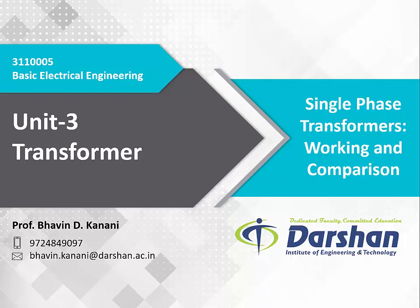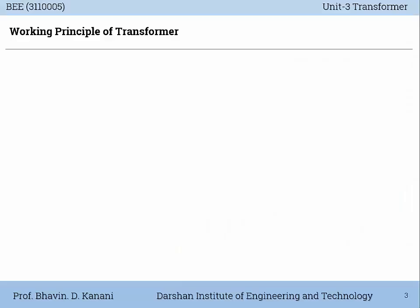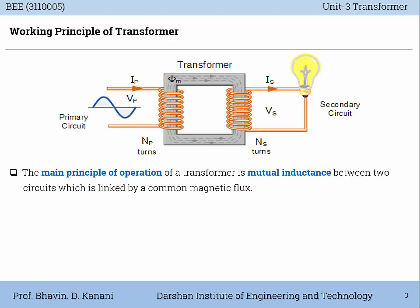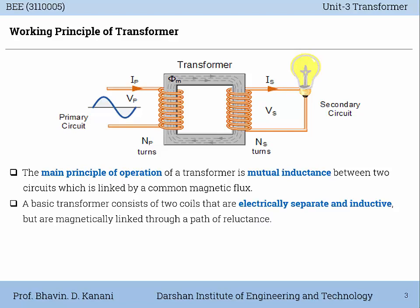Namaskar friends. In this session we will learn about the subject basic electrical engineering, unit 3: transformer. The major topic is single phase transformers — working and comparison. The working principle of transformer, as seen from the figure, the main principle of operation of transformer is mutual inductance between two circuits which is linked by a common magnetic flux. A basic transformer consists of two coils that are electrically separate and inductive but are magnetically linked through a path of reluctance.